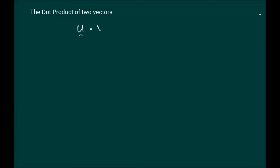Notation-wise, we write it as u dot v. The dot is the familiar multiplication operation. In multiplication of numbers, 2 dot 3 is sometimes written as 2 times 3, or x dot y is written as xy. However, this cannot be done in vectors. Whenever we talk about the product of two vectors, u dot v, we usually don't drop this dot.